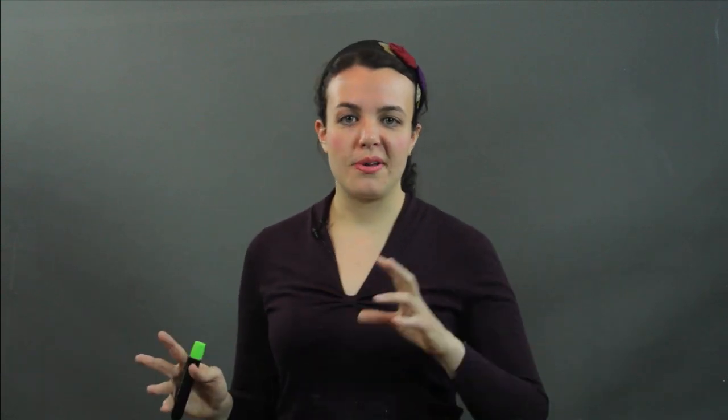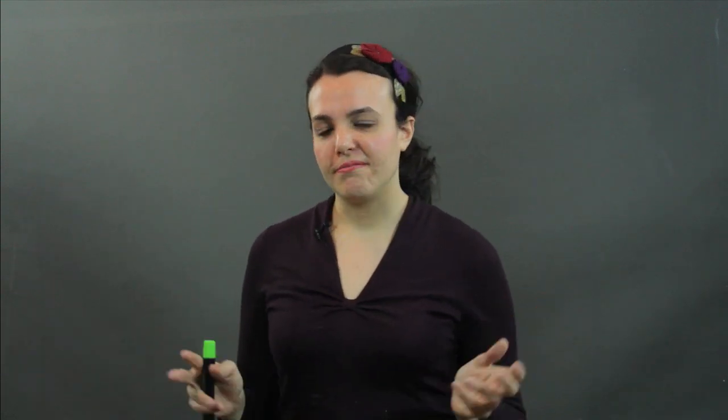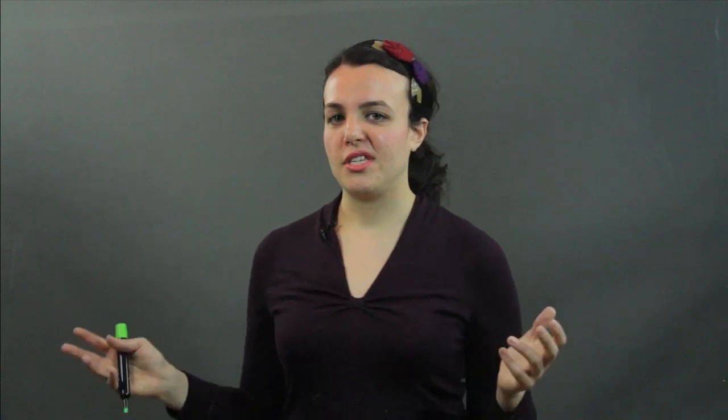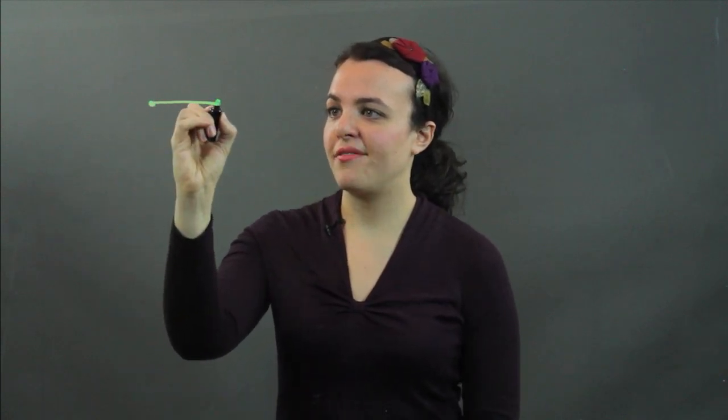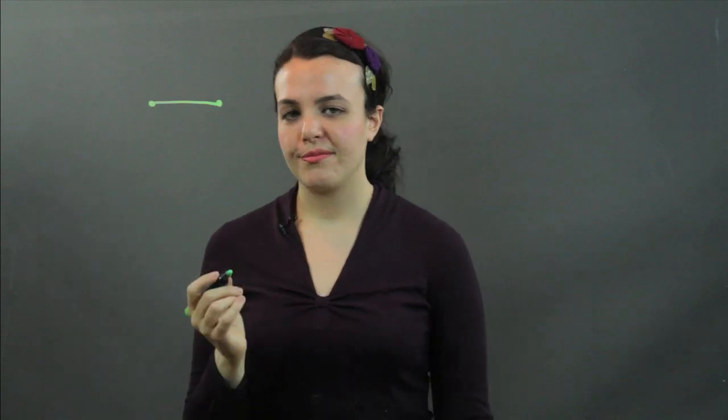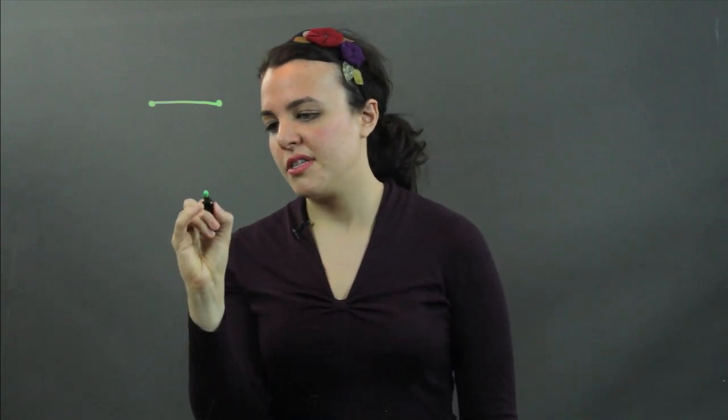Now, for something to be congruent, it has to have the same shape and measure. Well, all line segments have the shape of a line segment. It doesn't vary from this. So first of all, they all have the same shape.